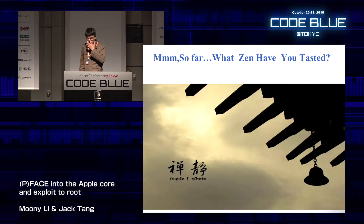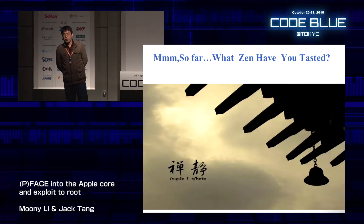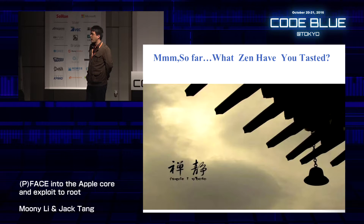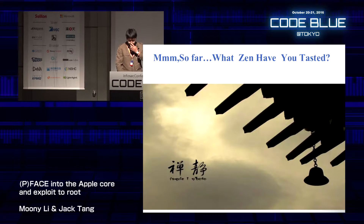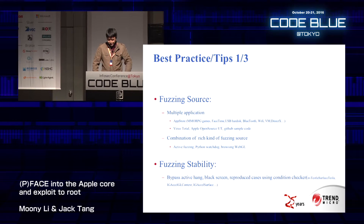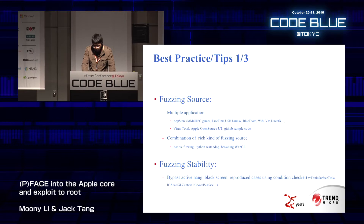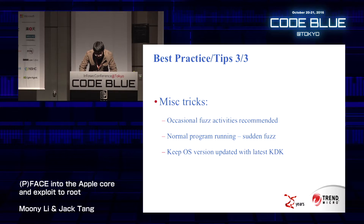So far, during our passive fuzzing activities, what best practices or tips have we gotten? In this part I will introduce some of the best practices and tips. They cover fuzzing sources, fuzzing stability, reproduction, automation, and miscellaneous challenges.